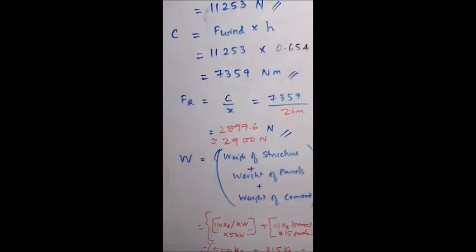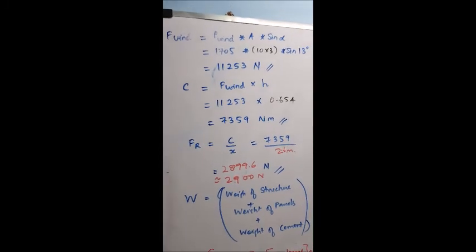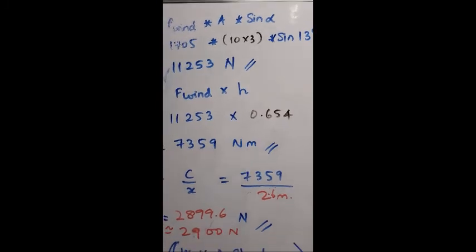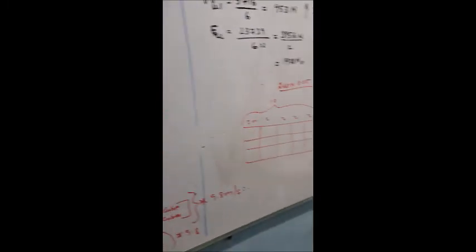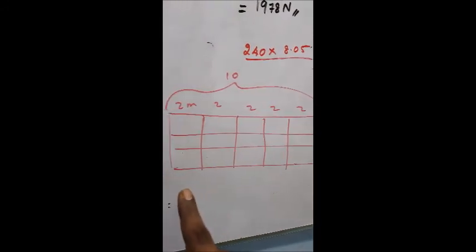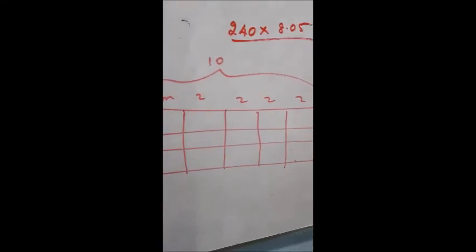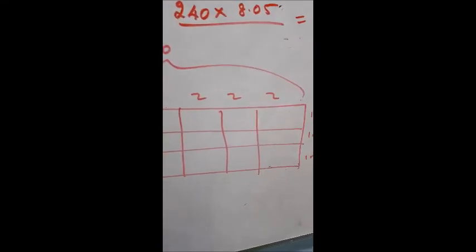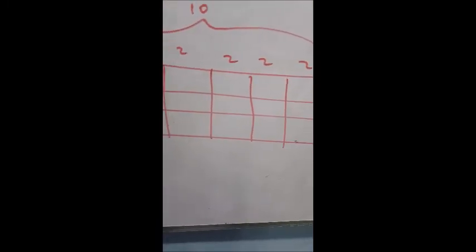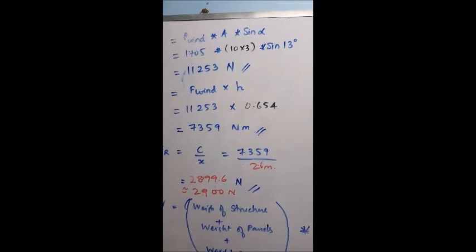The force of the wind is the pressure of the wind times the area times the sine of the alpha degree. I have arranged the panels this way. We have around 15 LG Mono X series panels, which means that each panel is around 2 meters in length and 1 meter in width. We have 3 rows, 5 columns. That is 10 by 3 meters and hence 30 square meters.